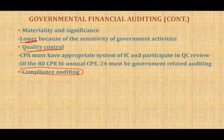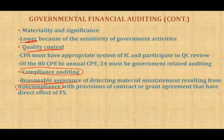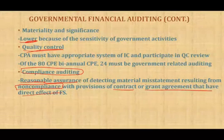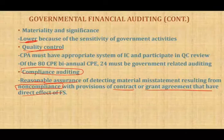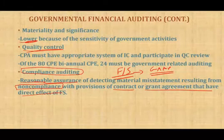Compliance auditing is important. The auditor can only provide reasonable assurance — not absolute assurance — of detecting material misstatements resulting from non-compliance with provisions of contracts or grant agreements that have a direct effect on the financial statements. Even though you are auditing for non-compliance, you are sampling and may not look at everything. In addition to compliance auditing, you are still auditing the financial statements according to generally accepted accounting principles.